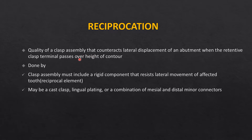Reciprocation is the quality of the clasp assembly that counters the lateral displacement of the abutment tooth when the retentive clasp terminal passes over the height of contour. As the retentive arm passes over the maximum convexity and engages the undercut, lateral forces are applied on the tooth. To counter this, the reciprocal arm placed on the opposite — lingual — side counters this lateral movement. Reciprocation is achieved by a rigid reciprocal element, which may be a cast clasp, lingual plate, Kennedy bar, or double lingual bar.